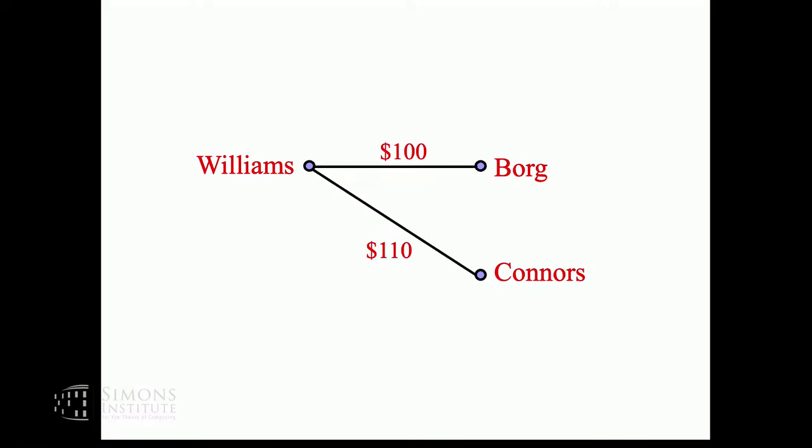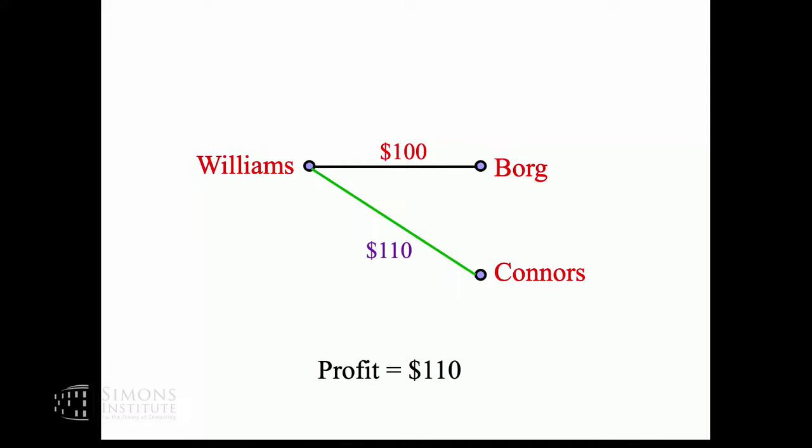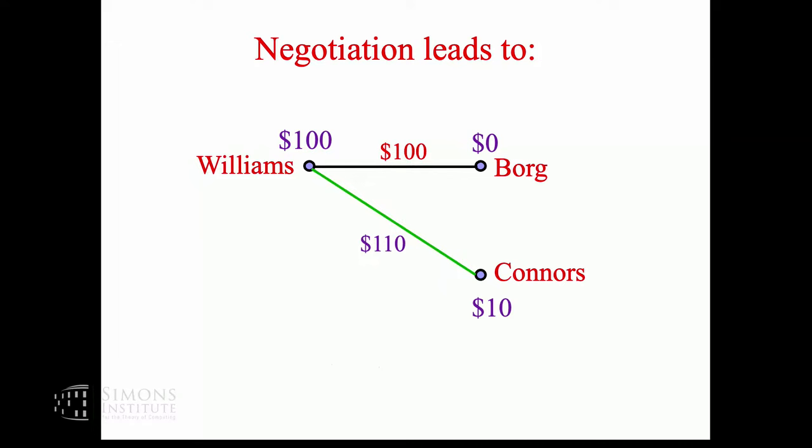Indeed she gets the whole profit and these guys get zero profit. The reason being that she's good and the men have no alternatives. She has alternatives. If you have alternatives you can negotiate. If you have no alternatives, you take what you get. Then Connors ups his game and now with Serena they can make $110. Connors says give me half the profit, and she says take $10 or I'm going to play with Borg.